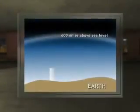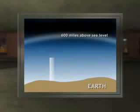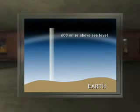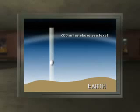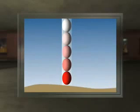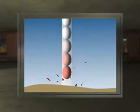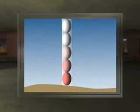Picture a clear plastic tube going from a spot on earth to 600 miles above sea level — that is where the atmosphere ends. In other words, there is no more stuff. Now, let's fill the tube with eggs. The eggs at the bottom of the tube will have greater pressure on them, causing them to break and become more dense as the eggs now fill all the space in the bottom of the tube.